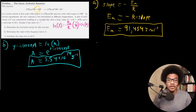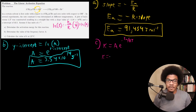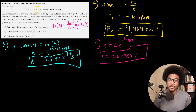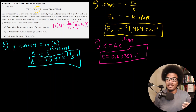Finally, we calculate the rate constant at 25°C. We plug the frequency factor, activation energy, and temperature (converted to 298 Kelvin) into the general Arrhenius equation K = A times e to the negative Ea over RT. This gives a rate constant of 0.03357 per second. These examples demonstrate how to apply the Arrhenius equation — both in its two-temperature form and its linearized graphical form — to solve kinetics problems.